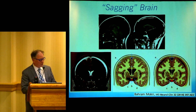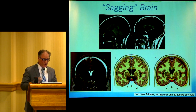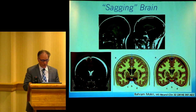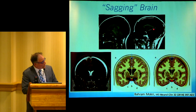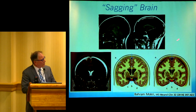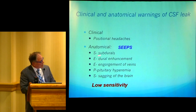Brain sagging is something we see with CSF leaks, over-shunting, over-drainage, and with leaks so small they aren't even recognized. We see dural and meningeal enhancement, engorgement of the veins, enlargement of the pituitary gland, and a general sagging of the brain — which is equivalent to Chiari malformation. You can also do measurements at the front end of the aqueduct to see if it's lower than the clivus and the top of the tentorium. Different measurements are made to assess how much brain sagging there is. Chiari malformation is one of the signs of brain sagging. Other signs include subdural sterile enhancement, engorgement of veins, pituitary swelling, and sagging of the brain.